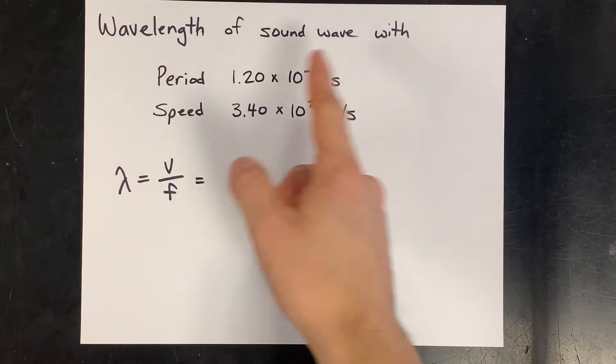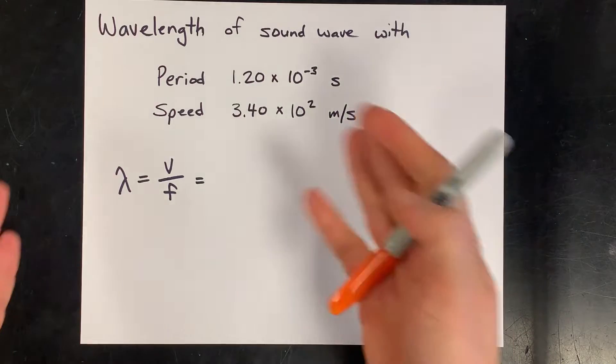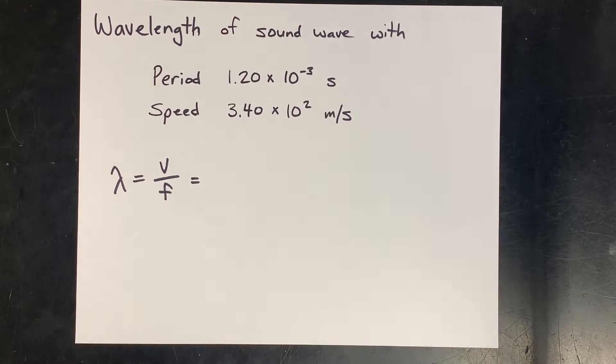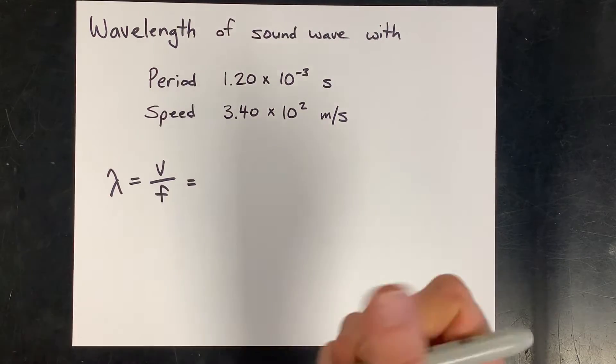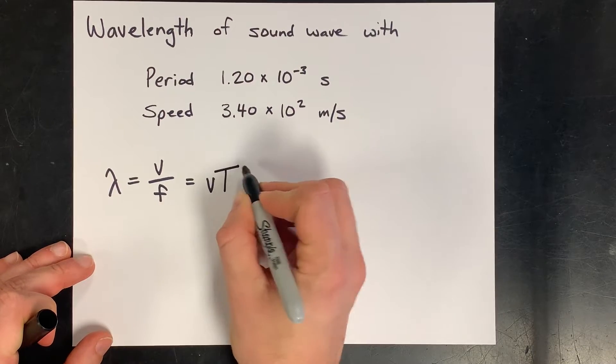We're being asked to calculate the wavelength of a sound wave given the period and the speed. You're probably familiar with the formula that wavelength equals speed divided by frequency. Luckily for us, frequency and period are inversely related, so the wavelength is just the speed of the wave times the period.